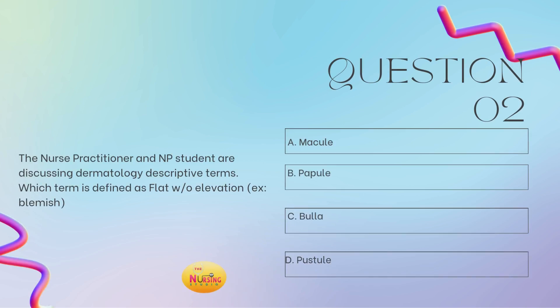Question number two: the nurse practitioner and NP student are discussing dermatology descriptive terms. Which term is defined as flat without elevation? An example is like a blemish. Is it A, a macule? B, a papule? C, a bulla? Or D, a pustule? Take a moment and tell me what you got. The stem of the question asks: which term is defined as flat without elevation, like a blemish? The best answer is A, a macule.